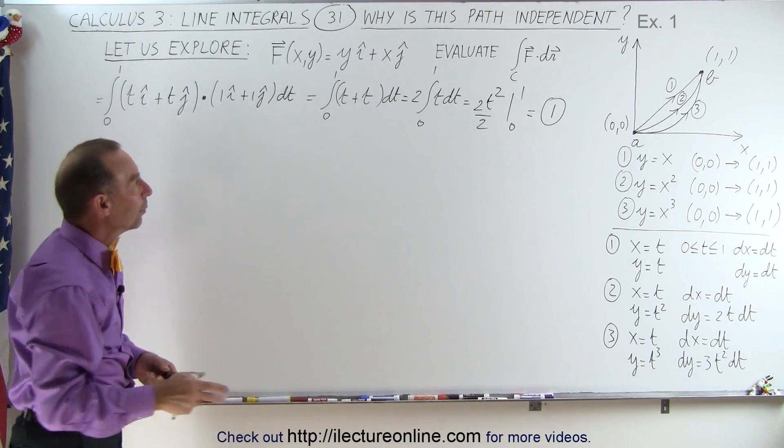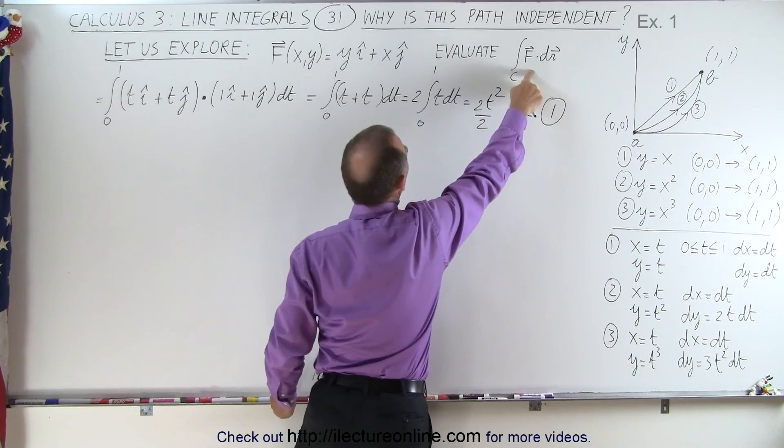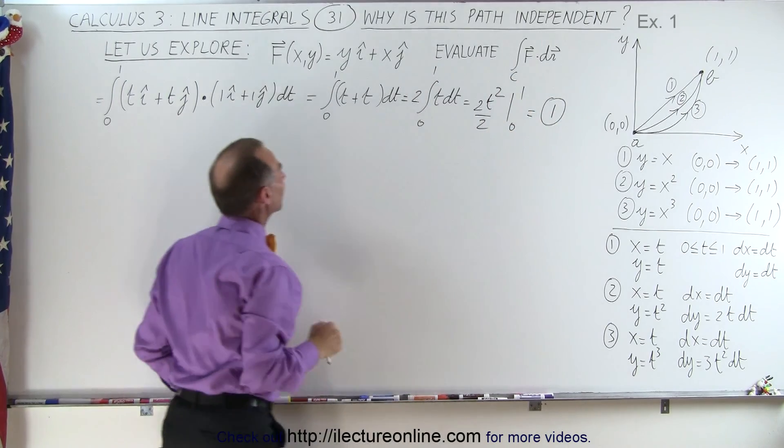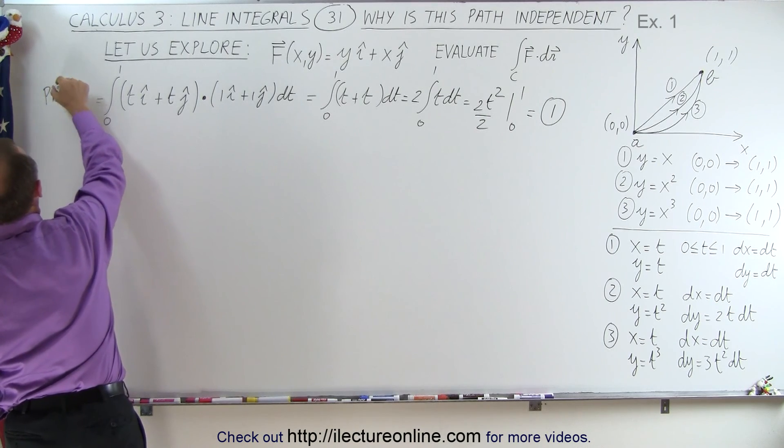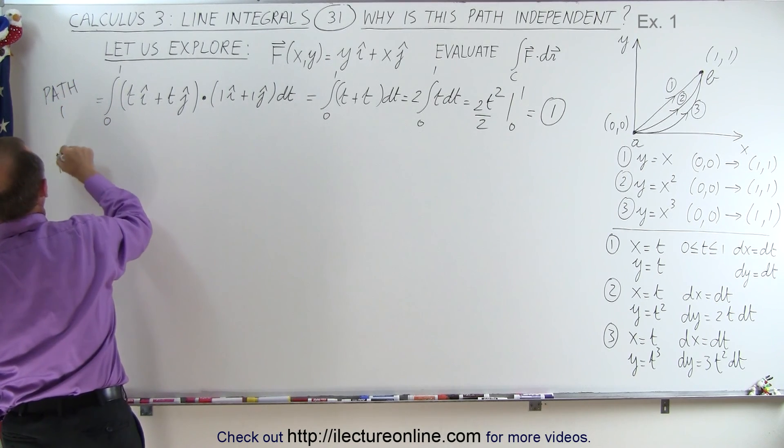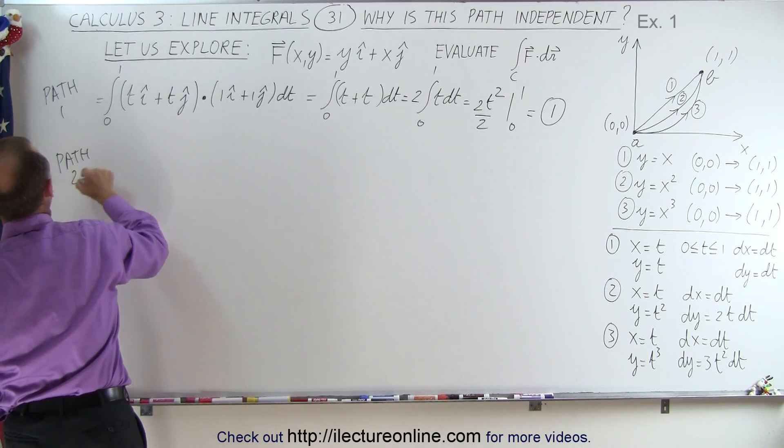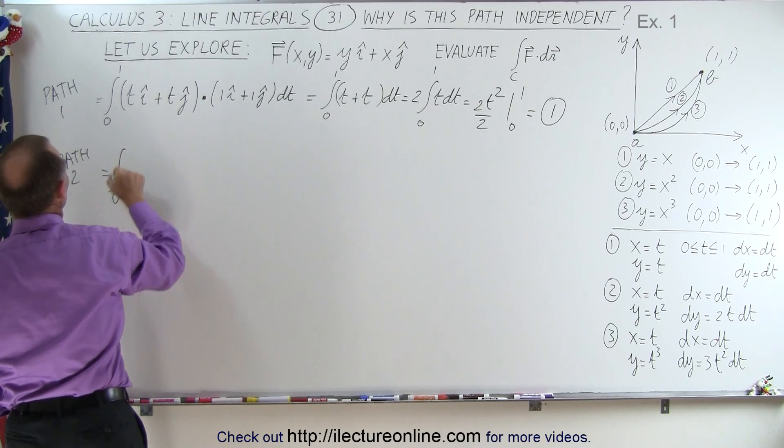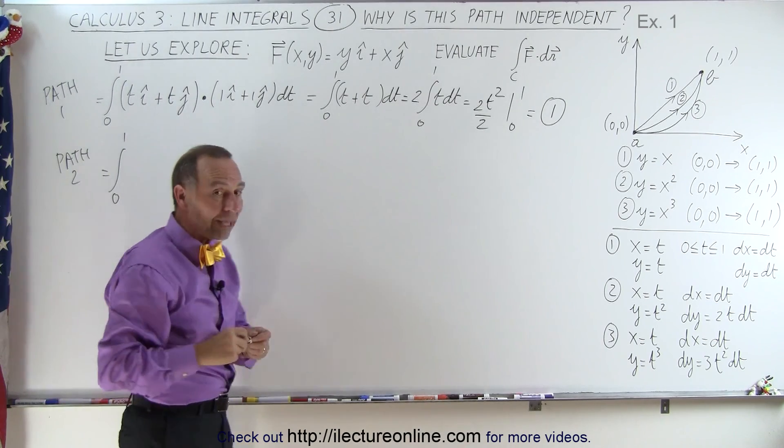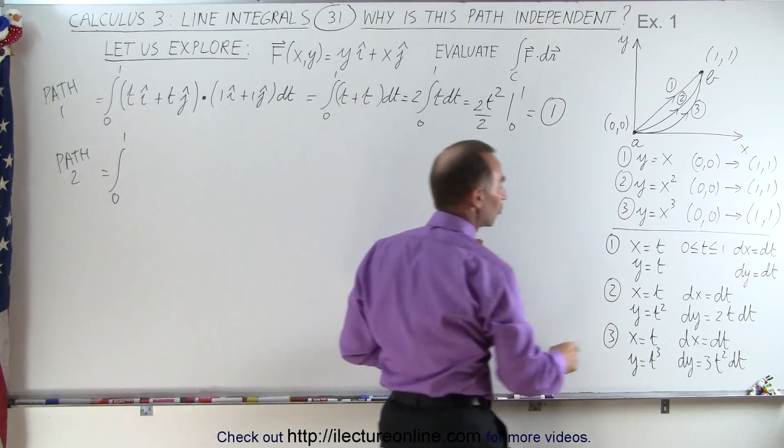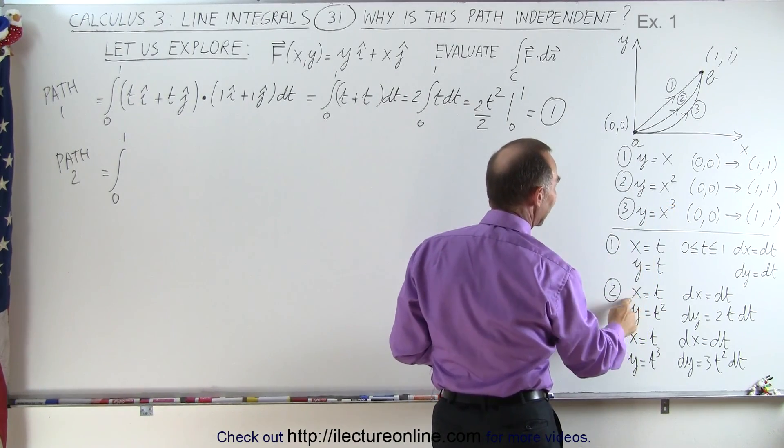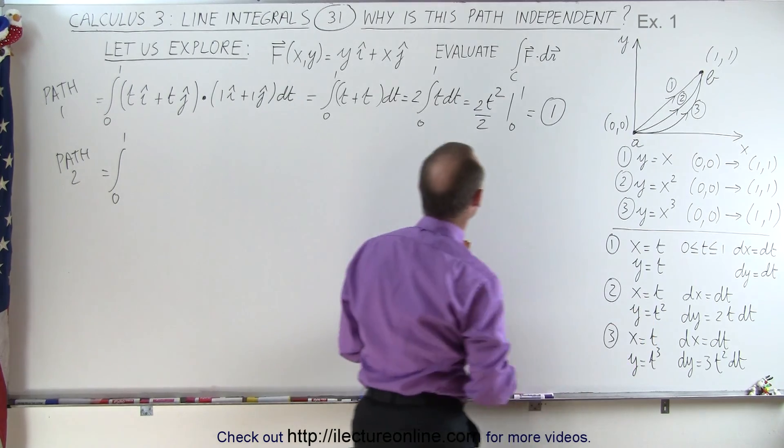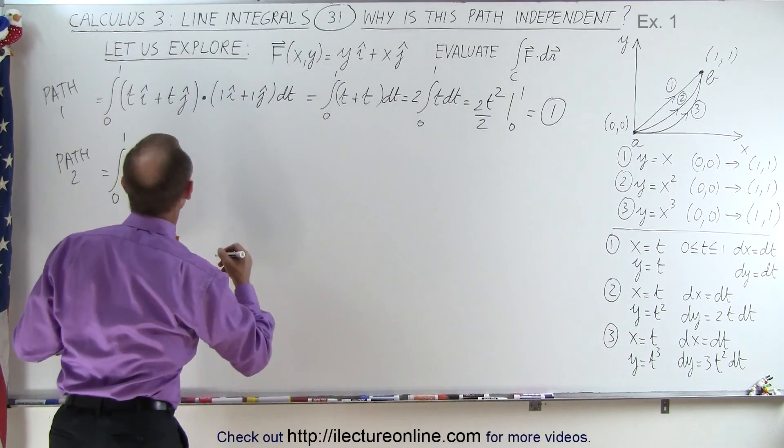Now we're going to do this again. We're going to evaluate the same integral, but now we're going to take path number 2. So this is path number 1. Now we're going to do path 2. That's equal to the integral from 0 to 1. But now we don't use a linear function. We use the function y equals x squared. So if we let x equals t, then y will be t squared. So this becomes the following.